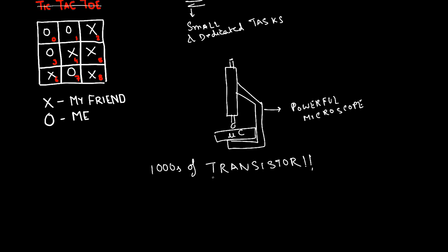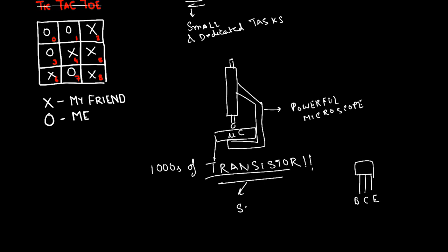Now, what is a transistor? A transistor is basically a 3 terminal device which can be used for multiple purposes. It can be used as a switch, it can be used as an amplifier, it can be used as an oscillator and so on. In most integrated circuits and in the microcontroller chip, a transistor is used as a switch.